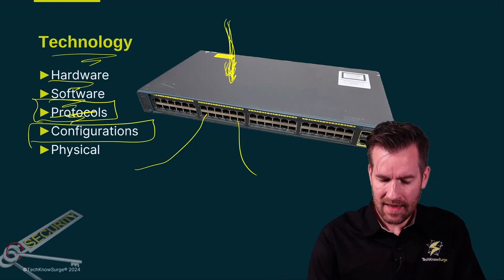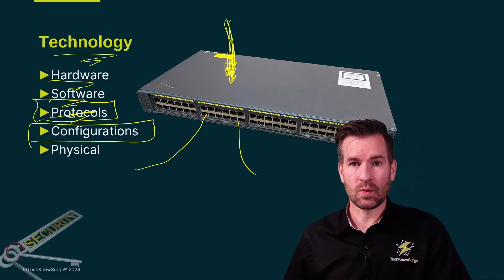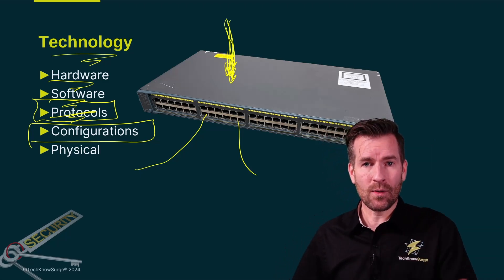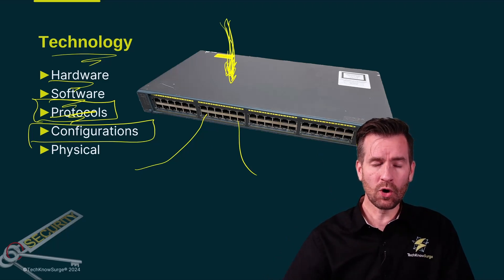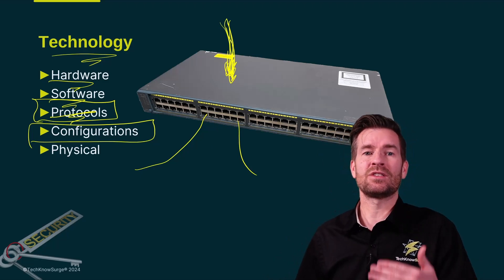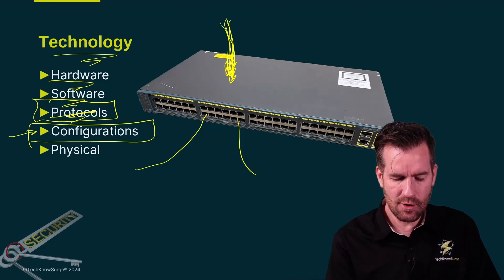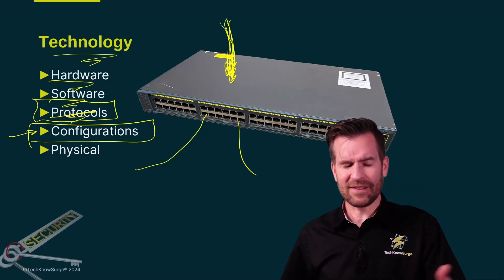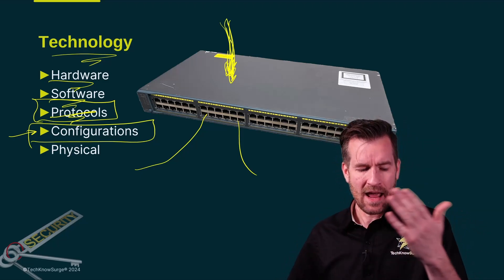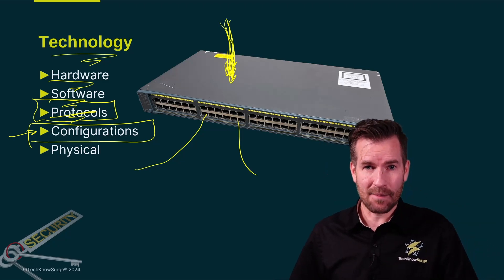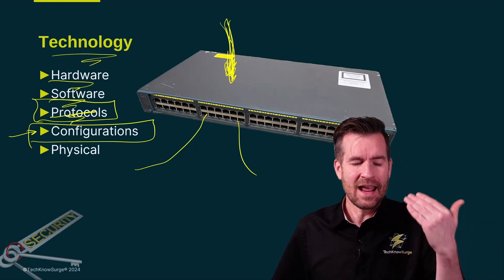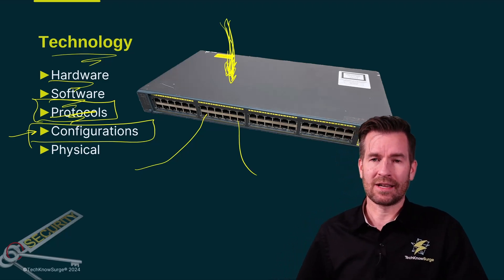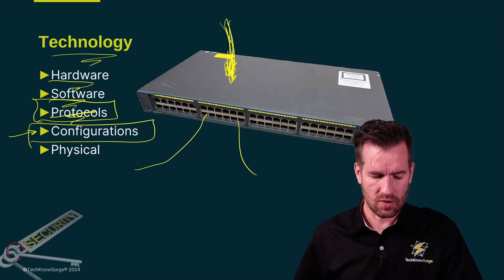Then there's configuration. This is a piece of hardware, software, and protocols that can be configured — we can get on the switch and tell it how it's going to operate. This is the human interaction side of it, and often this is the issue. More often than not, it's not a hardware or software or protocol weakness — it's something that somebody has misconfigured on a firewall or some sort of device to cause a problem.